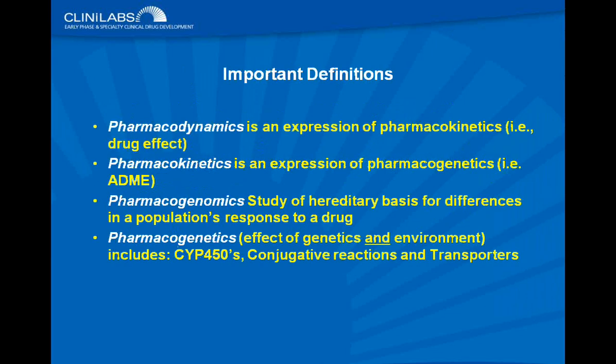What is pharmacogenetics? There are some important definitions to consider. Pharmacodynamics is an expression of pharmacokinetics — that is, drug effect, or what the drug does to the body. Pharmacokinetics is an expression of pharmacogenetics: absorption, distribution, metabolism, excretion — ADME — or what the body does to the drug. Pharmacogenomics is the study of the hereditary basis for differences in a population's response to a drug; essentially, you can't pick your parents. Pharmacogenetics is the effect of genetics and the environment on things including cytochrome P450s, conjugative reactions, transporters, receptor interactions, and so on.